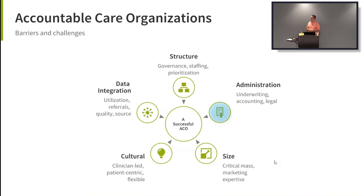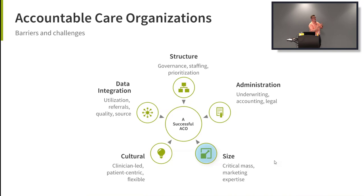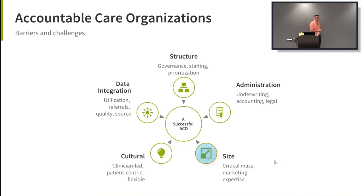Administratively, you suddenly have to start underwriting, accounting, and managing significant legal work. There's also the scale challenge: a small ACO, like a small insurance company, probably doesn't last. You have to reach a critical mass of beneficiaries, which means not only having infrastructure for that scale but also being really good at marketing. As we move toward a more patient-empowered economy, there's still a lot of confusion in the market — and the incentives of the ACO structure push even harder toward winning patients, because market share is critical when you're a pseudo-insurer.